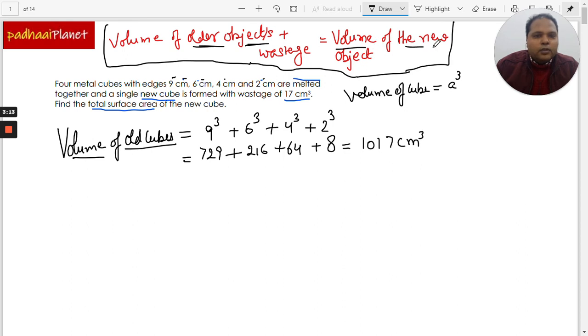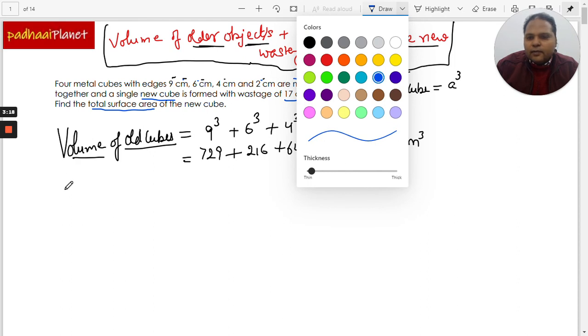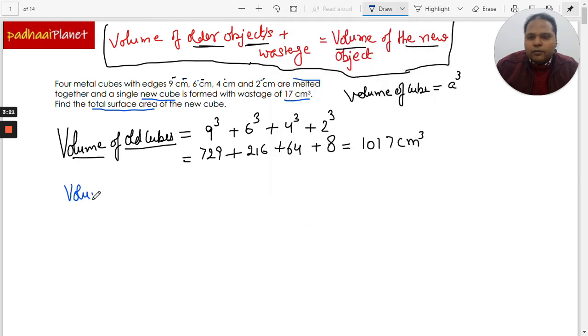Now let's get the volume of the new object, the new cube. So let's write the volume of new cube. Now volume of the new cube, if we look at this relationship, then we can understand it will be like